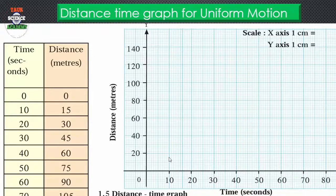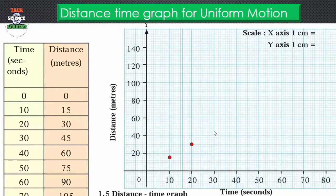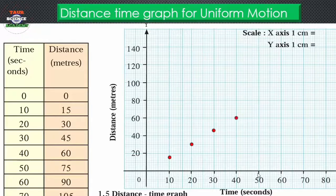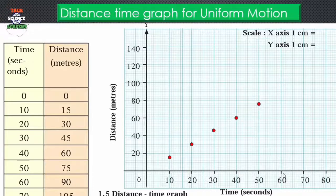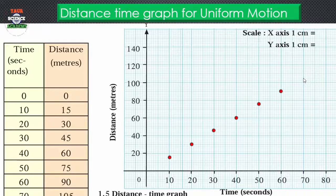With the help of this chart and scale, let's plot the points. First point: at 10 seconds, 15 meters distance covered — mark the point there. For 20 seconds it is 30, so exactly between 40 and 20. For 30 seconds it is 45 — above two and a half lines. For 40 seconds it is 60 — exactly here. For 50 seconds the distance covered is 75 — it is above 70, so mark the point there.